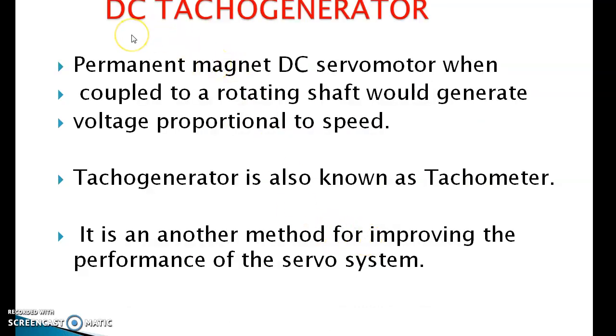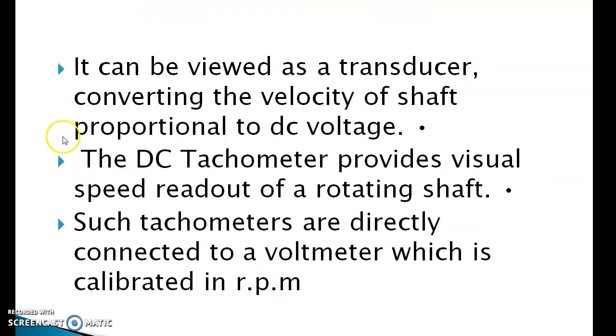Next topic is DC tachogenerators. The permanent magnet DC servo motor, when coupled to a rotating shaft, will generate voltage proportional to speed. Tachogenerator is also known as tachometer. It is another method for improving the performance of servo motors.